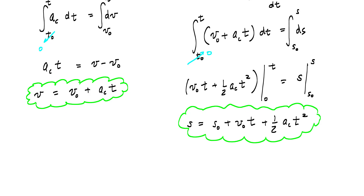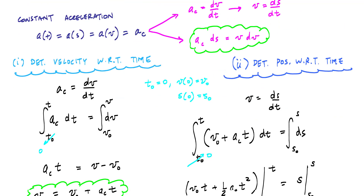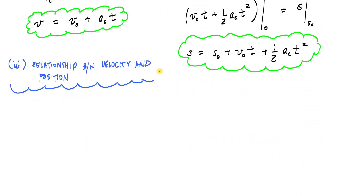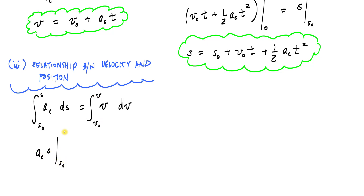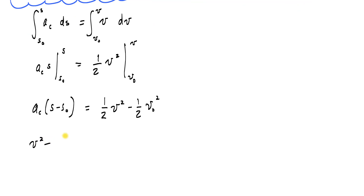Using the last relationship — where we eliminate time — AC·ds = v·dv. Since AC is constant, I set up the integral from s0 to s and v0 to v. This gives AC·(s − s0) = ½·v² − ½·v0². Rearranging yields the popular relationship: v² − v0² = 2·AC·(s − s0).